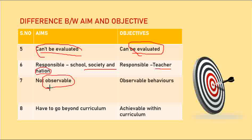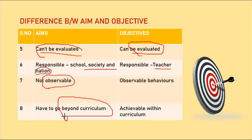In the case of aim, you have to go beyond the curriculum. For example, if you have an aim to shine in sports, badminton, or to become an artist or guitarist, that goes beyond academic study — that is your aim. But objectives are achievable within the curriculum. When we talk about educational objectives, they can be achieved within the curriculum.